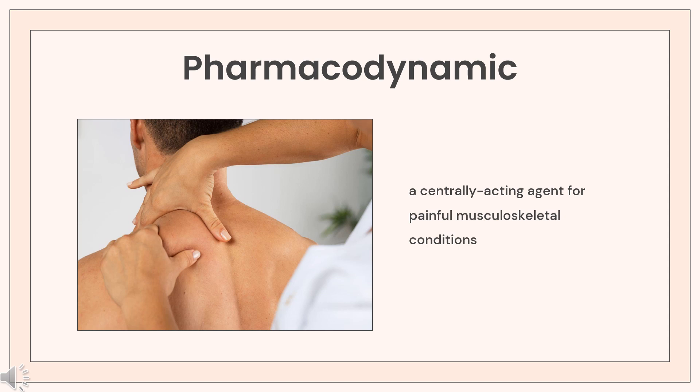Pharmacodynamics: Chlorozoxazone is a centrally acting agent for painful musculoskeletal conditions. Data available from animal experiments as well as human studies indicate that chlorozoxazone acts primarily at the level of the spinal cord and subcortical areas of the brain, where it inhibits multisynaptic reflex arcs involved in producing and maintaining skeletal muscle spasm of varied etiology. The clinical result is a reduction of skeletal muscle spasm with relief of pain and increased mobility of the involved muscles.